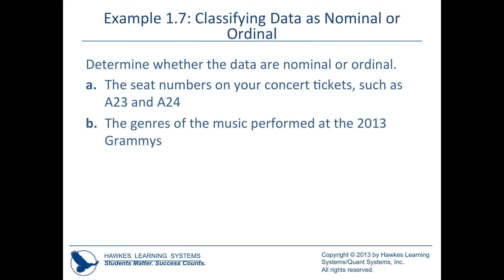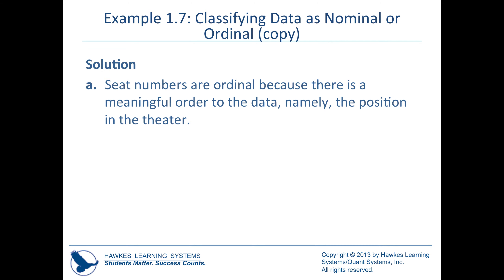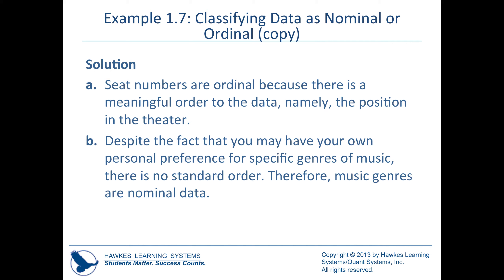To distinguish nominal from ordinal: concert seat numbers like A23 and A24 dictate some ordering — that's ordinal data. The genres of music performed at the 2013 Grammys (country, pop, rap, etc.) have no natural ordering — that's nominal. Nominal and ordinal are both qualitative and categorical; the difference is whether there's a natural ordering to the data.